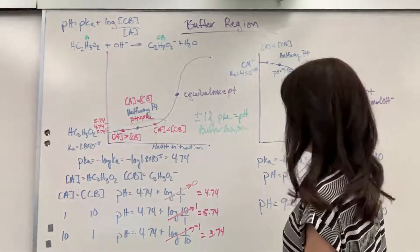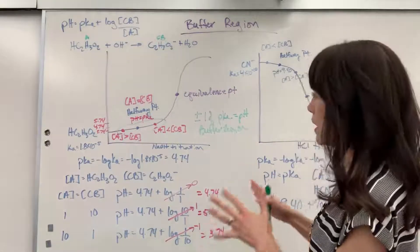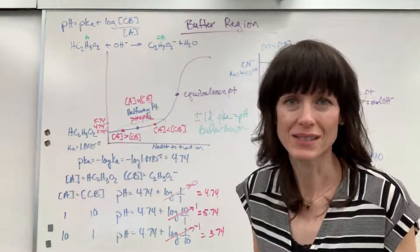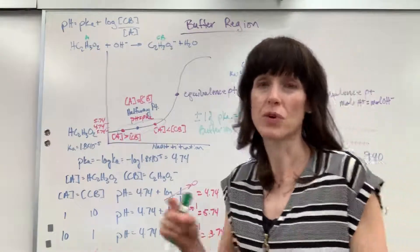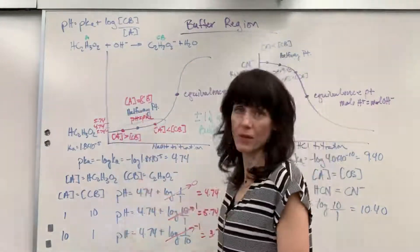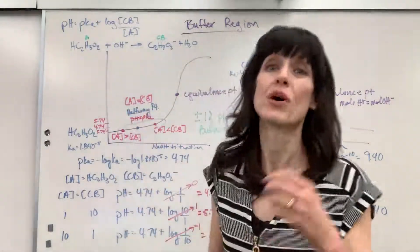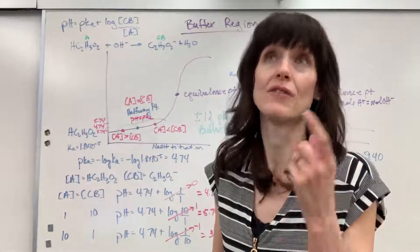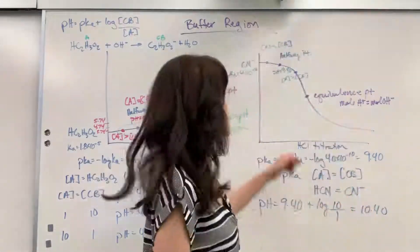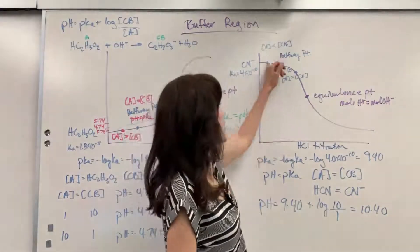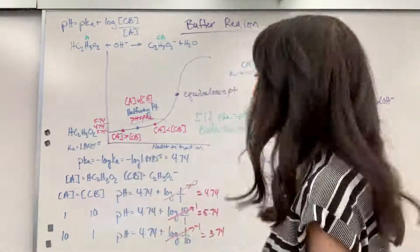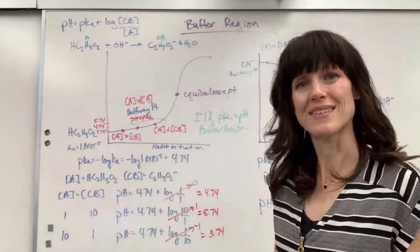There you have it on buffer region. The easy takeaway: if you have more acid than conjugate base, the pH is lower than the halfway point. If you have more conjugate base than acid, the pH is higher. Really easy takeaways for multiple choice questions you could be asked.